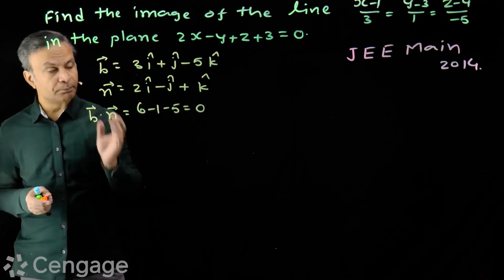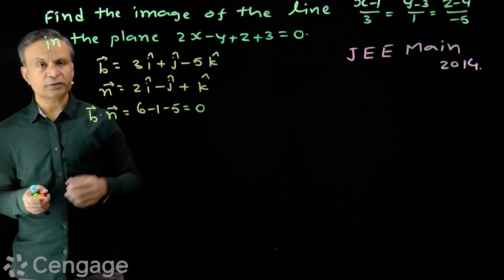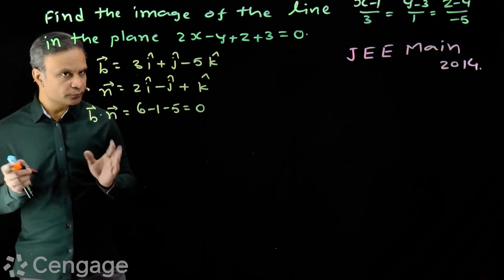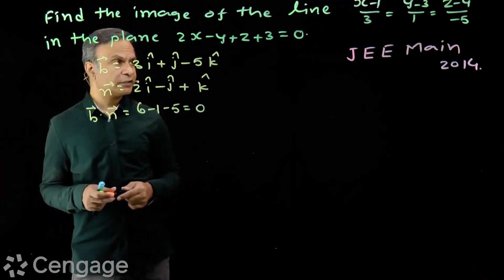So, line will be either parallel to the plane or it will lie on the plane. Kise check karenge? In donohon mein se kya hoga yeh kaise check karenge?